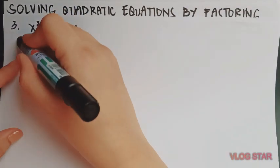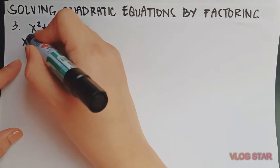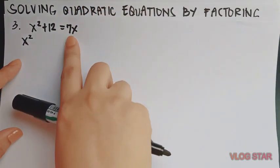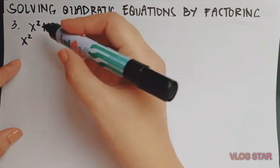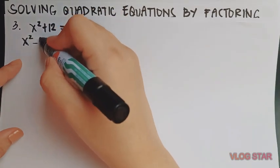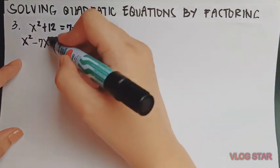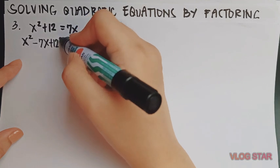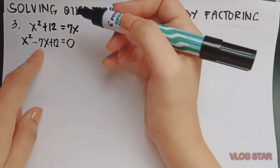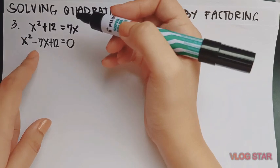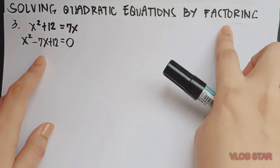So this will become x squared. This is our b, and since we have to move this on the side of the equal sign, it will become negative or minus 7x. Then copy 12 equals 0. So this is now written in standard form, so we can now proceed to solving by factoring.